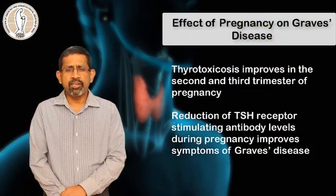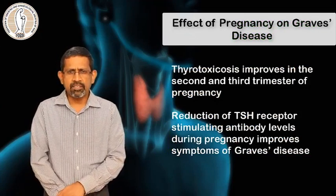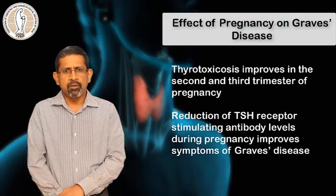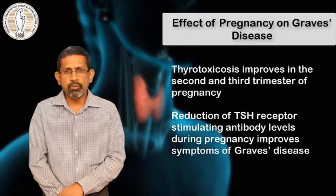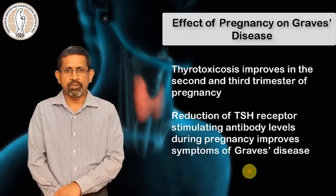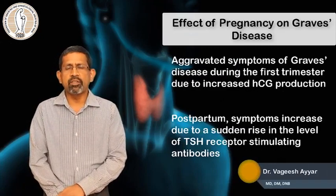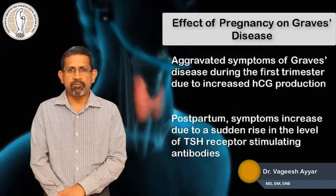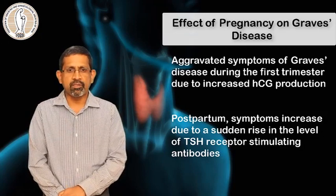The effect of pregnancy on Graves disease is different. In the first half there will be increased incidence of thyrotoxicosis, which improves in the later half of pregnancy due to immune suppression. The symptoms get aggravated during the first half because there is simultaneous production of HCG from the pregnant woman.